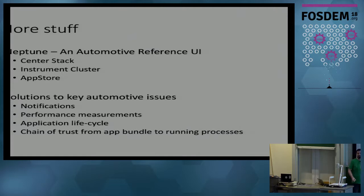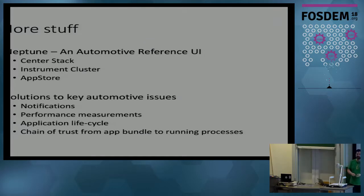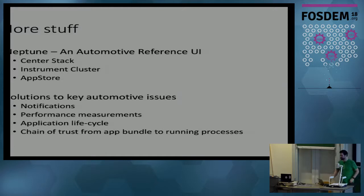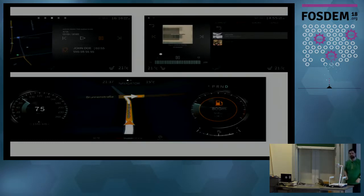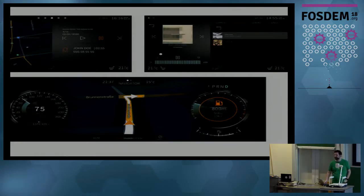We solve a number of things that are important in our industry. We do notifications and can prioritize and mute notifications in certain scenarios. We have tools for measuring performance, because we need a good frame rate and low latencies in all situations. We need to start quickly and manage applications we start and stop, install and uninstall. And we have a chain of trust from your application package to the Wayland surface being shown on screen. There's actually a facelift of this shown at CES, but it's still being polished code-wise.